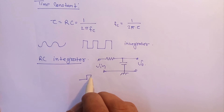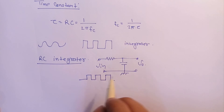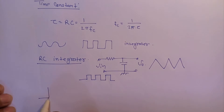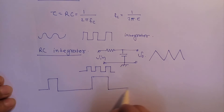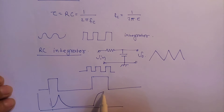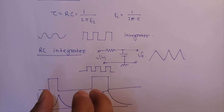If we apply a square wave, the integration of this square wave will be a triangular wave. The output response shows charging of the capacitor, then discharging of the capacitor, then again charging and discharging. If we increase the frequency of this on-off pulse or square wave, we will get a ramp or triangular type of waves.